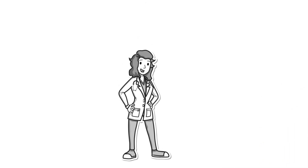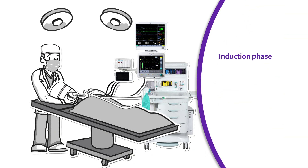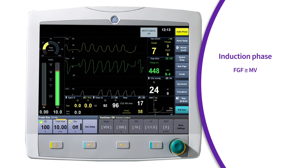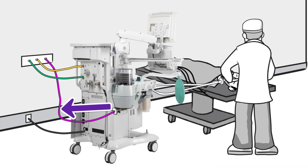We can apply this concept to the different stages of an inhalational anesthetic. During induction, the anesthesia provider may employ high fresh gas flows between 6 and 10 liters per minute. For most patients, this high fresh gas flow may meet or exceed the patient's minute ventilation, thereby reducing or eliminating the need to re-breathe any exhaled gases. This creates a non-re-breathing system, as most of the exhaled gases are going out to scavenging and not being re-breathed by the patient.